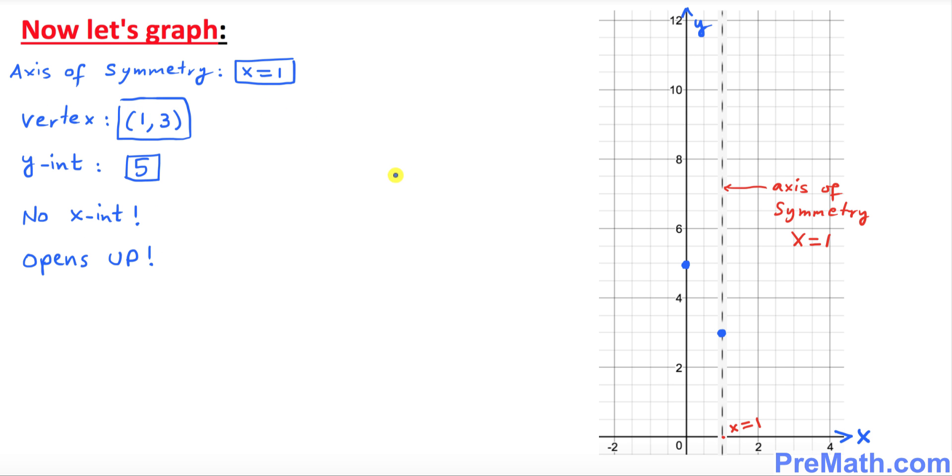Now in this step we're going to put together our graph. These are the info that we have collected so far in our previous steps. The axis of symmetry is x equals 1. The vertex is (1, 3). This is our vertex.